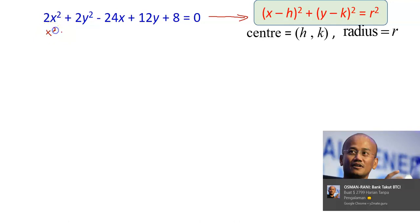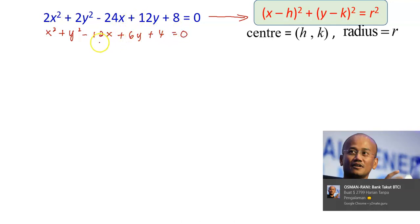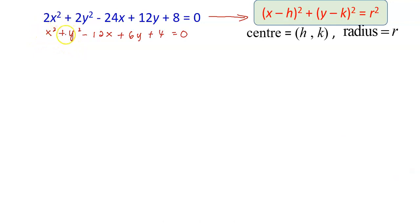After dividing, I will have x² + y² − 12x + 6y + 4 = 0. So after making the coefficients of x² and y² equal to 1, we can start to combine the terms with x together.